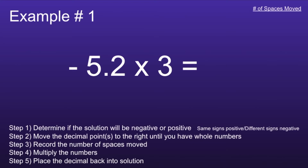Example number one: negative 5.2 times 3. There are five steps in order to solve this problem. The first step is to determine if the solution will be negative or positive. We can use the phrase 'same signs positive, different signs negative' to determine this. Since the first number is negative and the second number is positive, we will use 'different signs negative,' which means the solution will be negative.